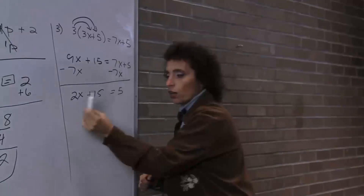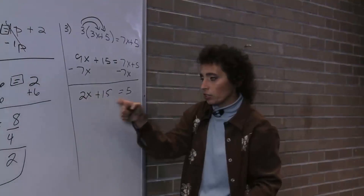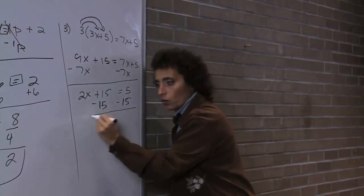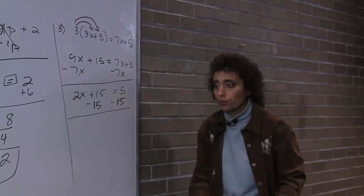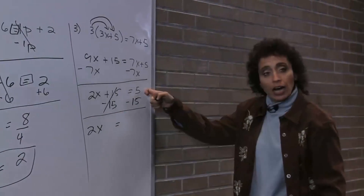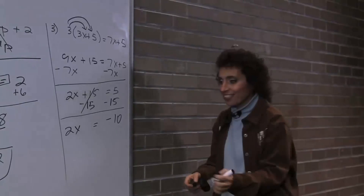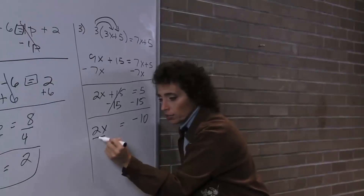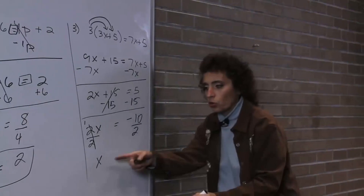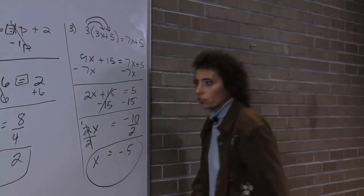Almost done. Variables have to be on one side, numbers on the other. I subtract 15 from both sides — 2x equals 5 minus 15. I have 5 but I owe you 15, so I owe you 10. Not done, because the coefficient is not a 1. The opposite of multiplication is division, so I divide by 2. Signs are different, so it's negative. 10 divided by 2 is 5. So x is negative 5.